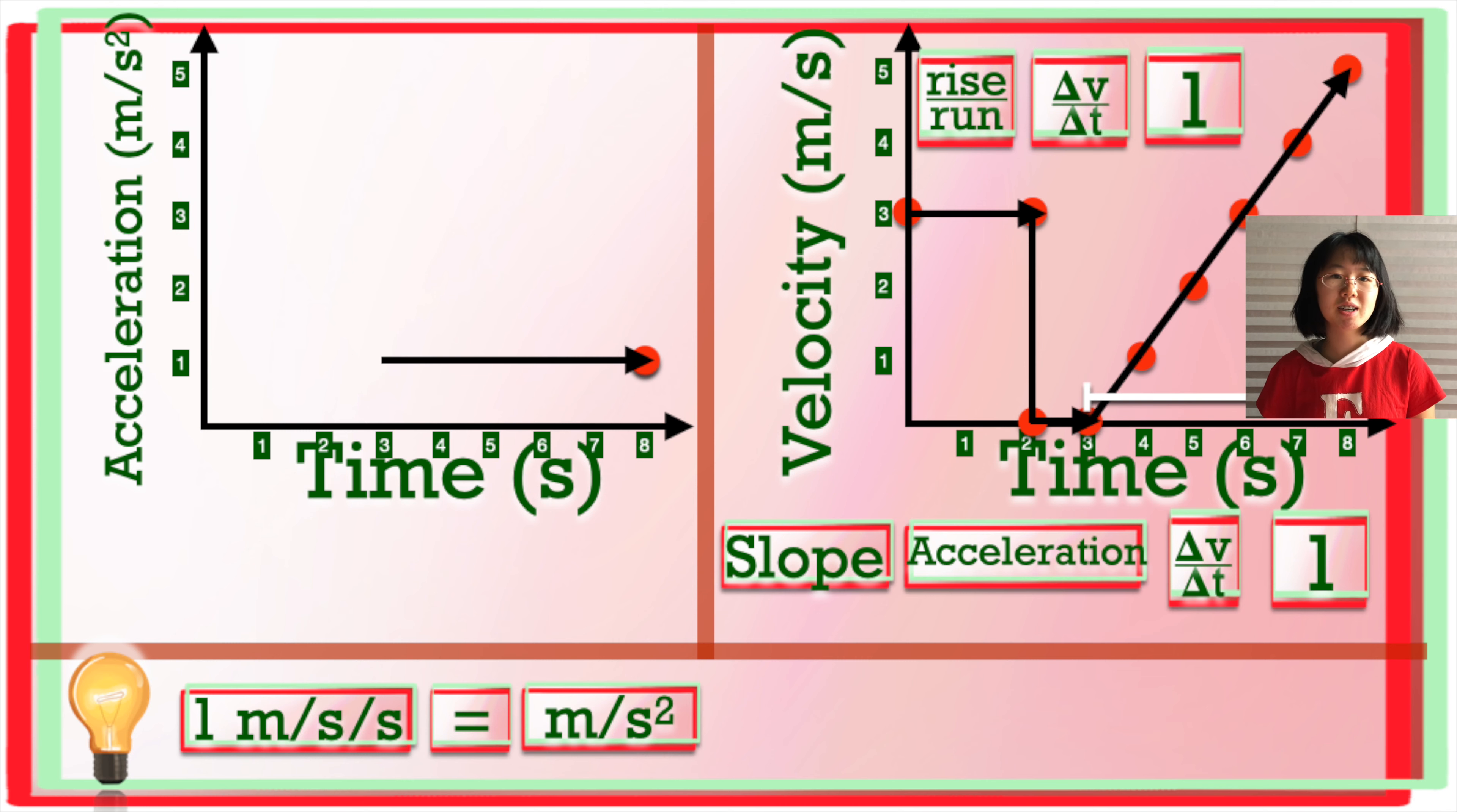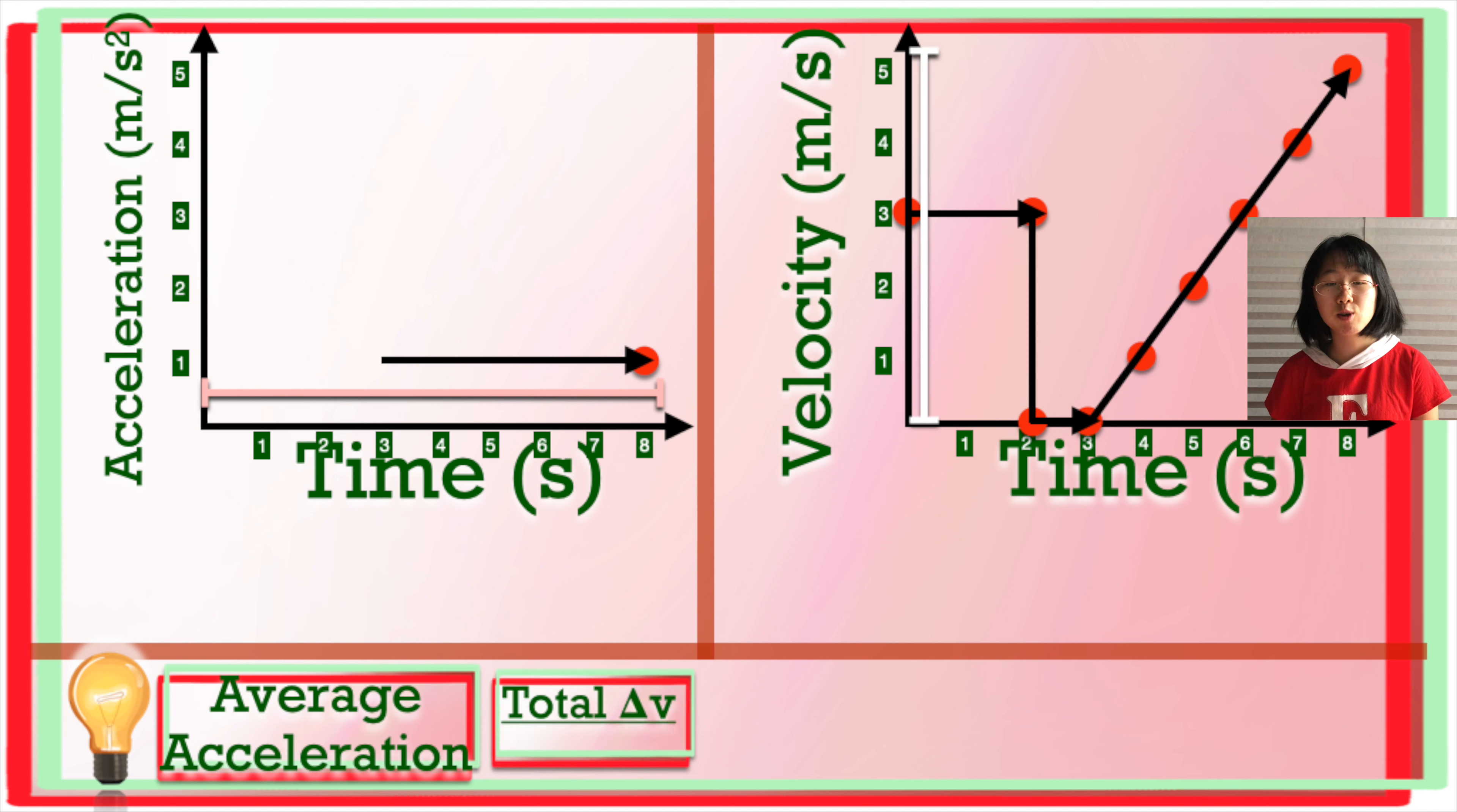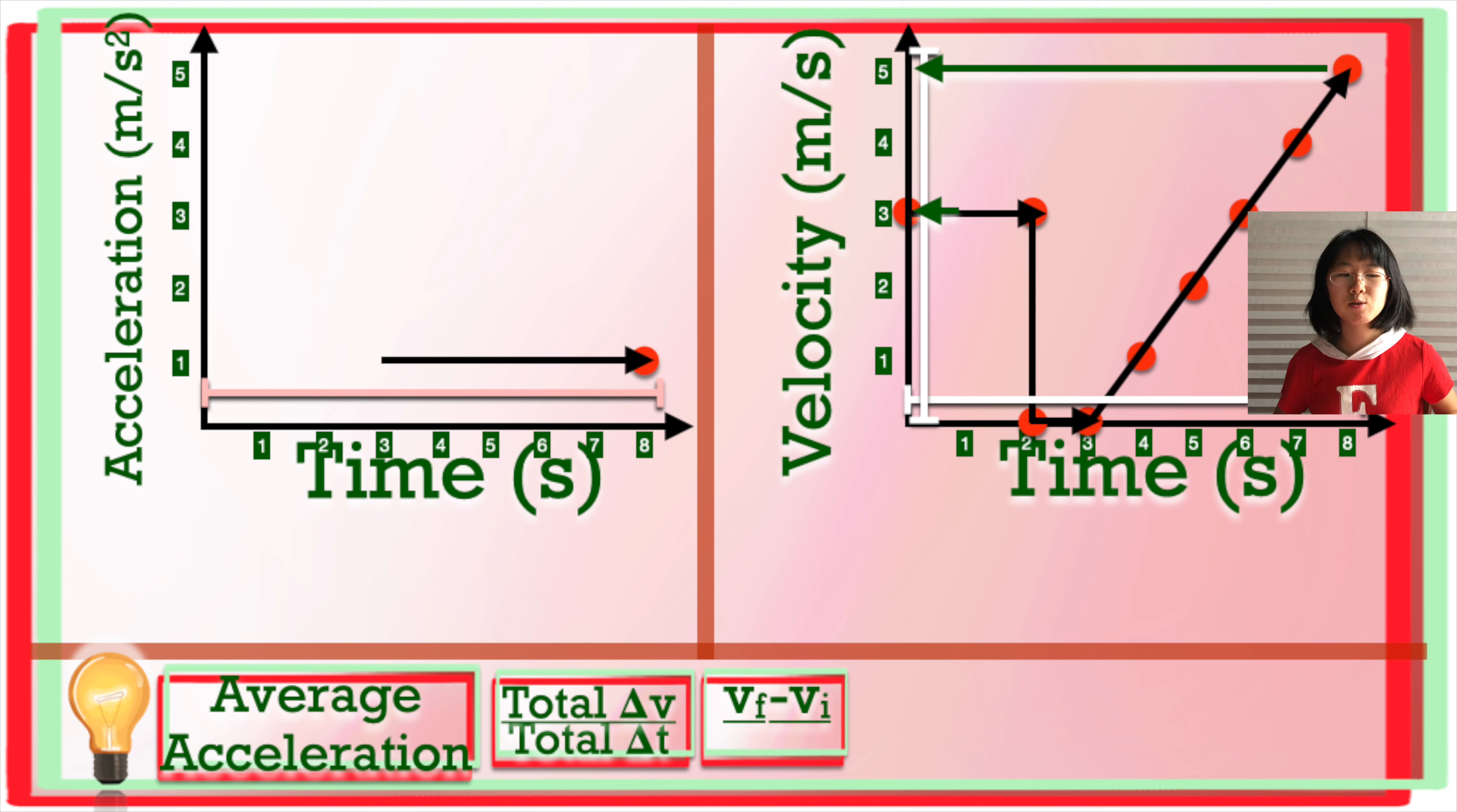Your acceleration was 1 meter per second squared for that part of your journey, but what about for your entire journey? We can find your average acceleration by dividing your total change in velocity by the total time. That would mean your final velocity minus your initial velocity, or the change in your velocity, divided by the entire time in the graph. So that's 5 minus 3 divided by 8, or 1 fourth meters per second squared.